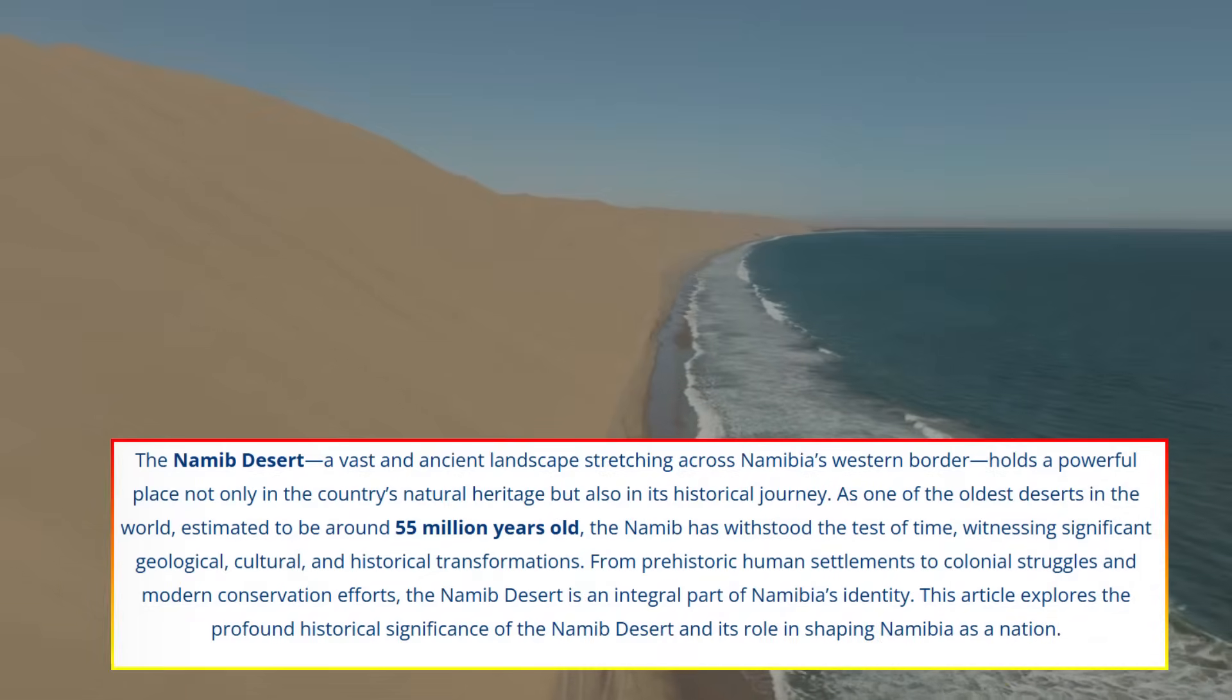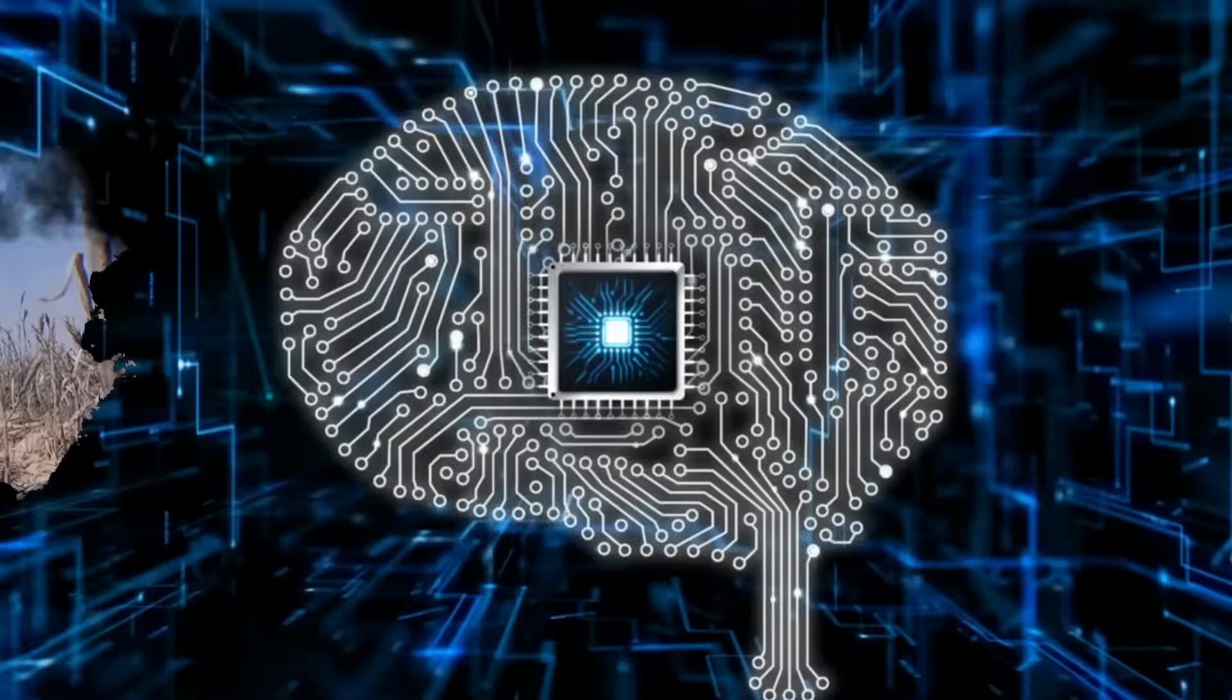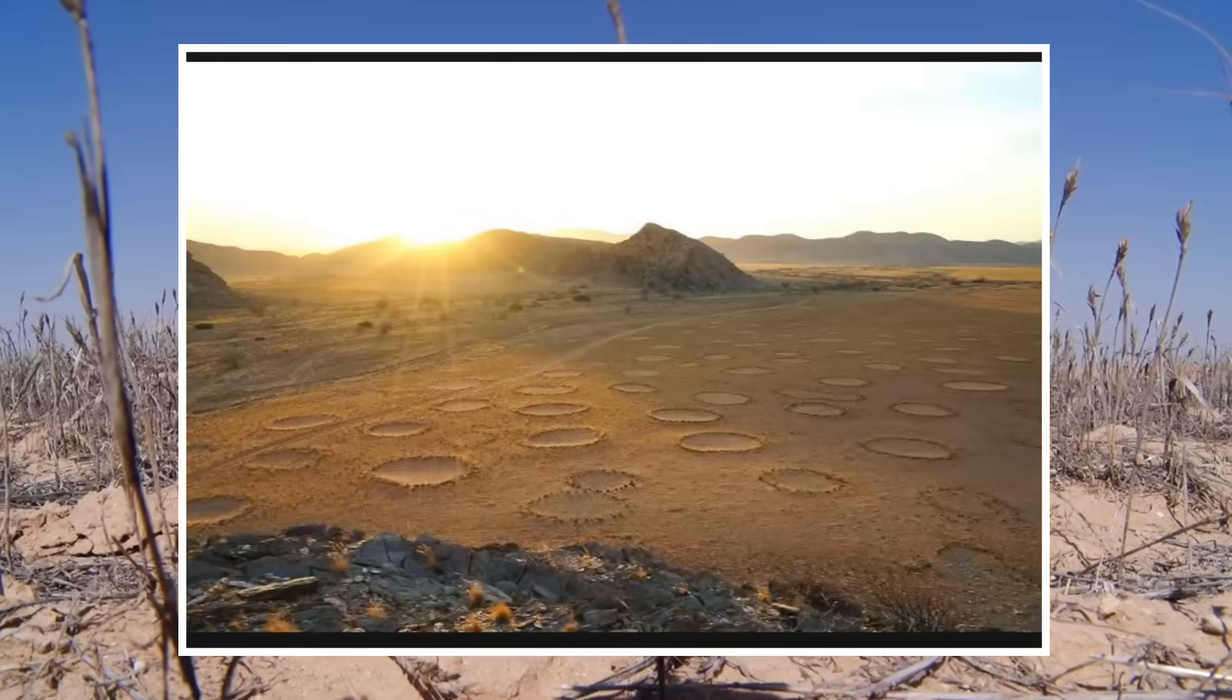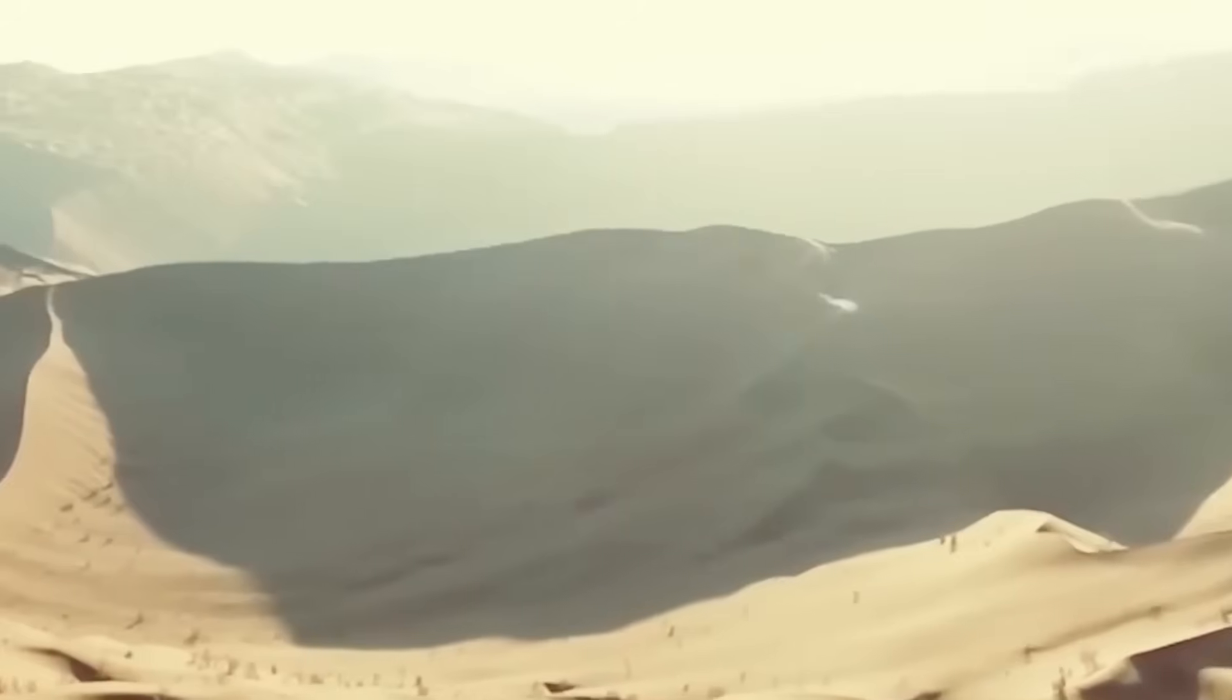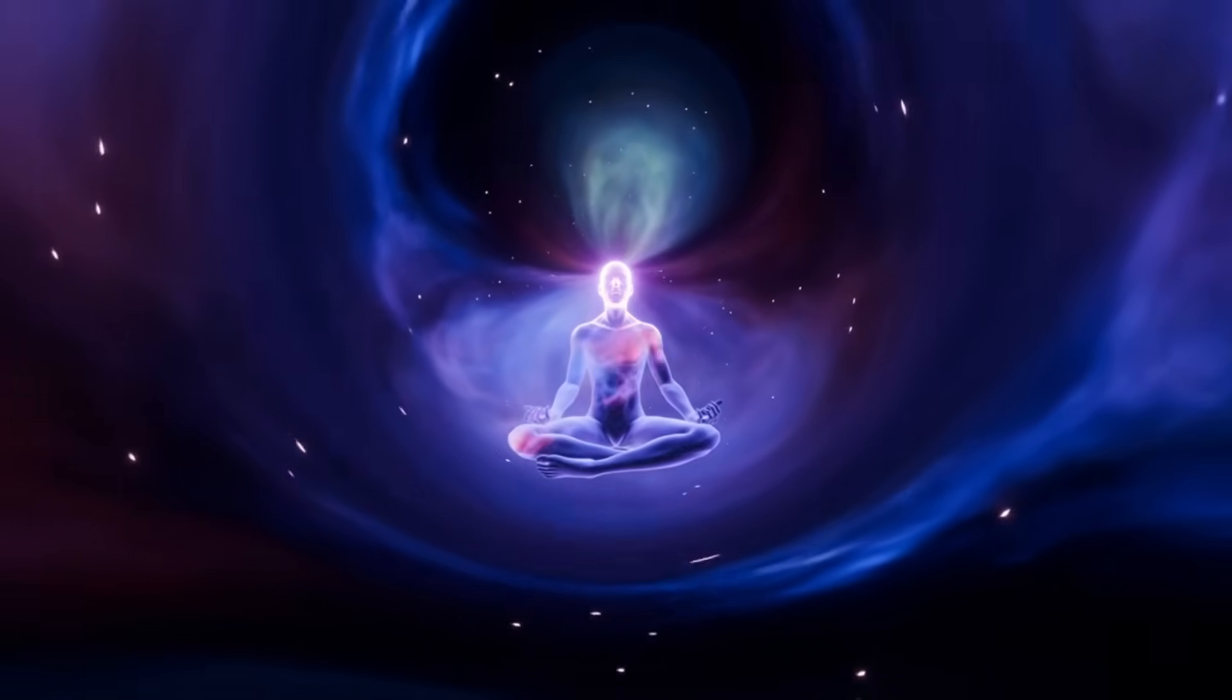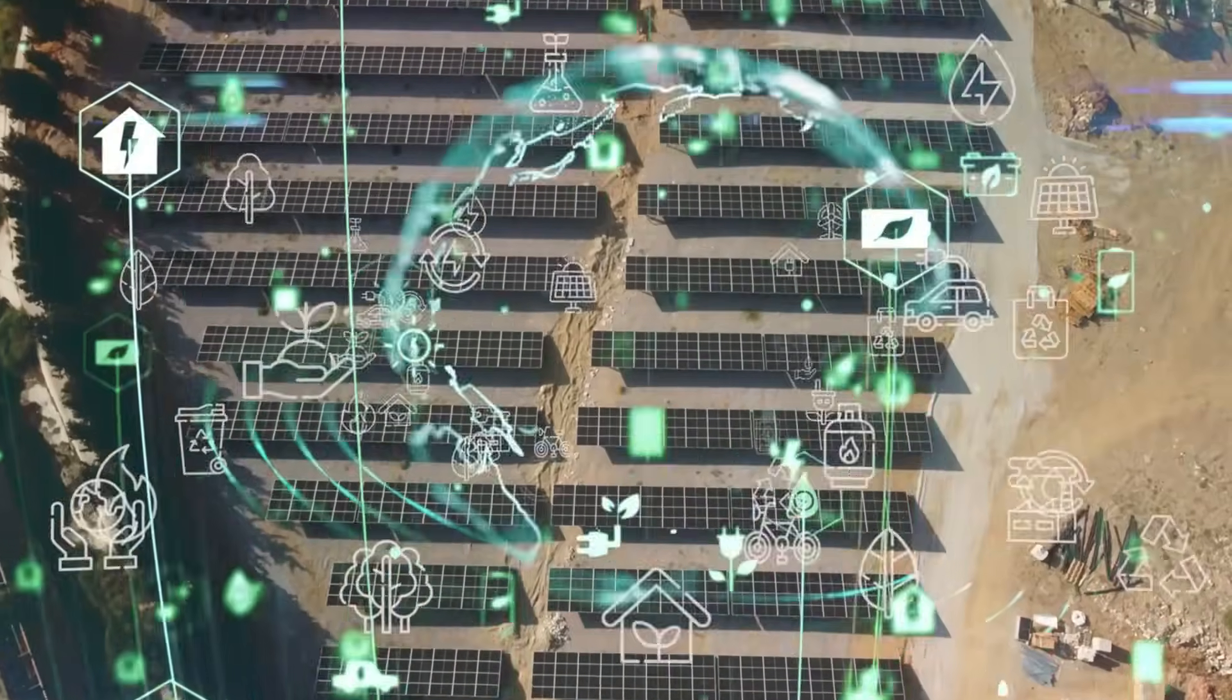These aren't just equations, these are the hidden algorithms of existence itself. The Namib desert holds a secret that will change everything you thought you knew about intelligence. Mysterious fairy circles, perfectly spaced patches of bare ground, aren't random. They're nature's own computational system solving resource distribution problems without a single conscious thought.